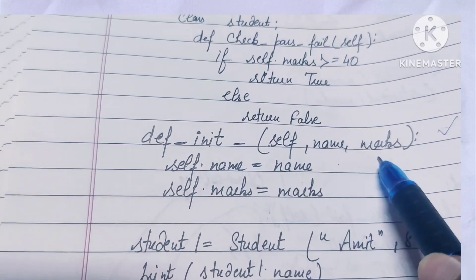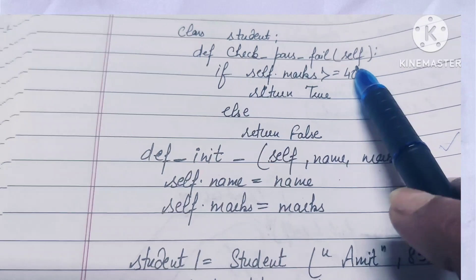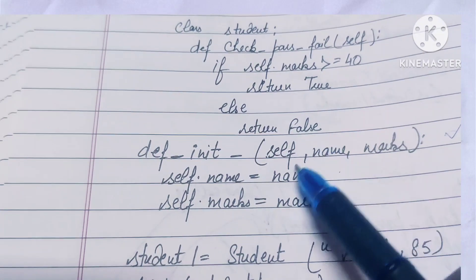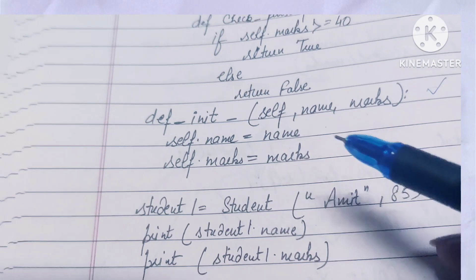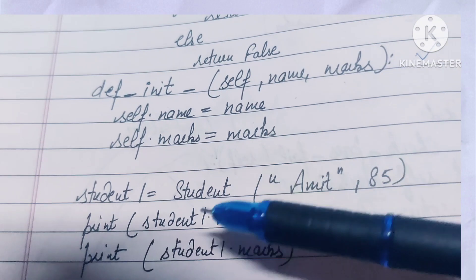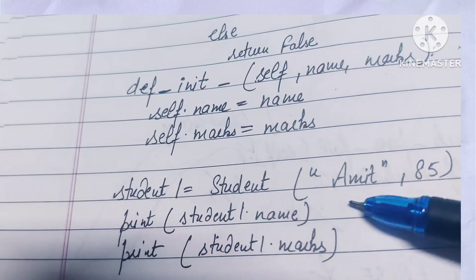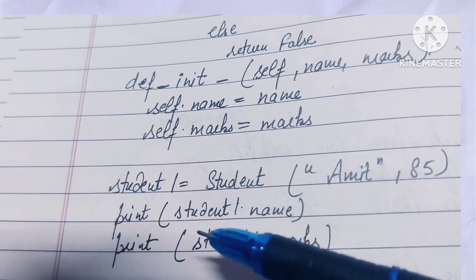This is the condition with marks. Now we'll give the value. Student one - we will give the value Anant and 85. We will print directly.